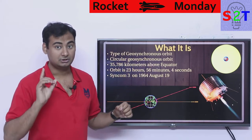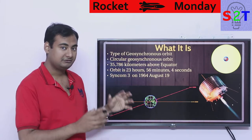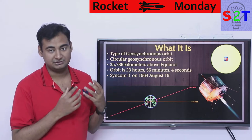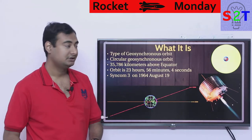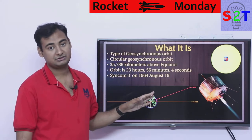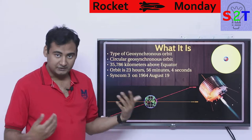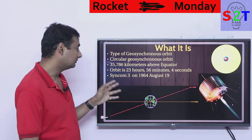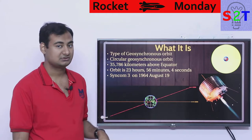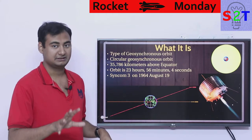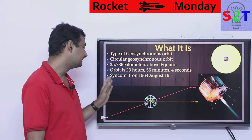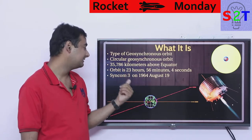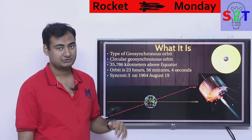Every geostationary orbit is geosynchronous, but not every geosynchronous orbit is geostationary. Generally we want geostationary. The first time we ever successfully used it practically was Syncom 3, on August 19, 1964.